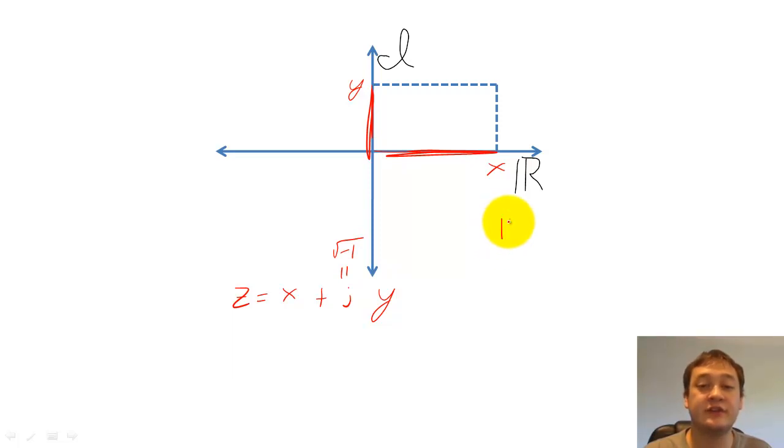In conventional notation, we say that x is the real part of z, and that the imaginary part of z is y.